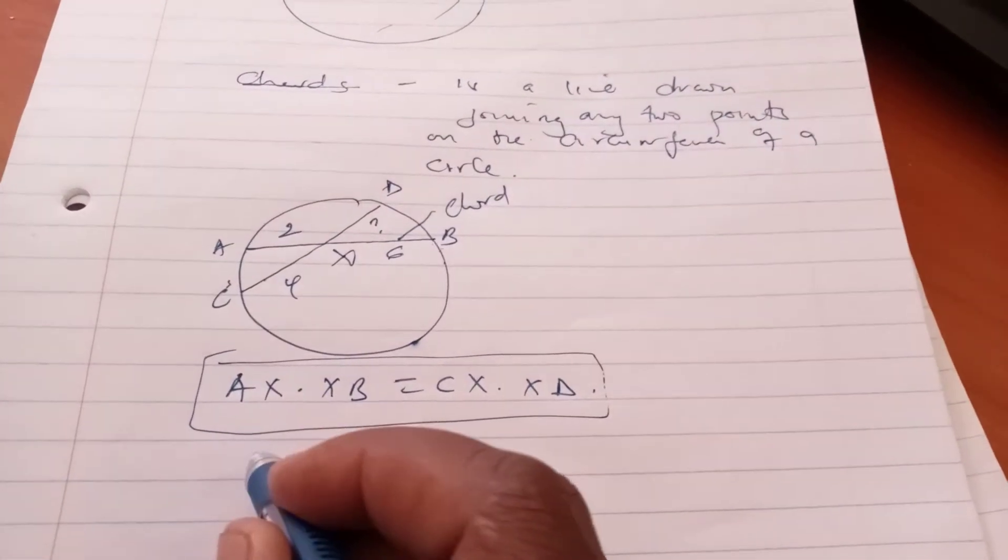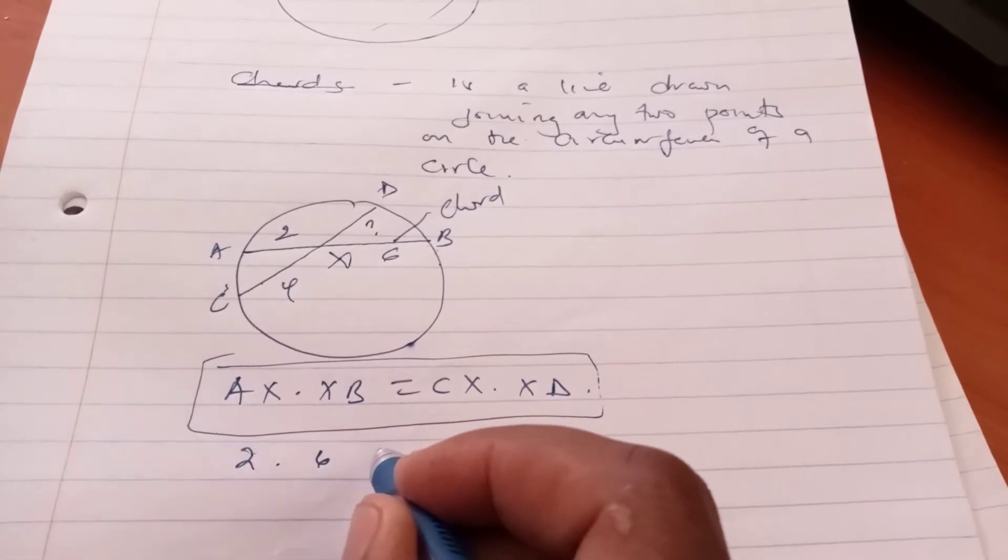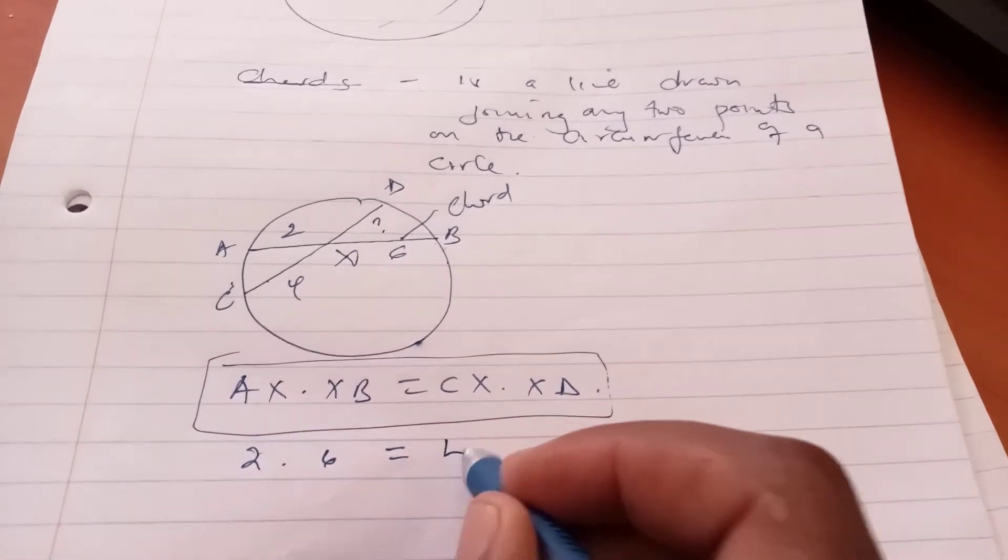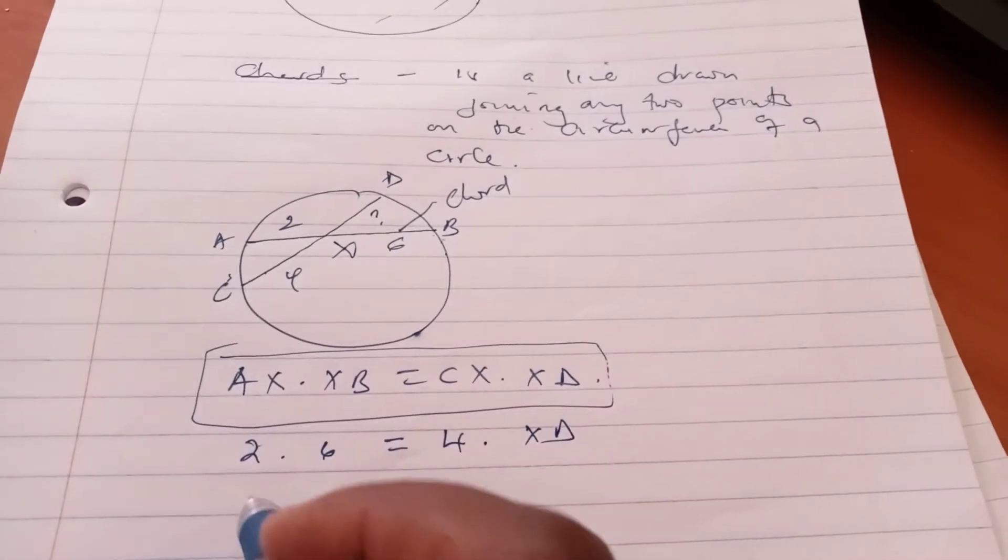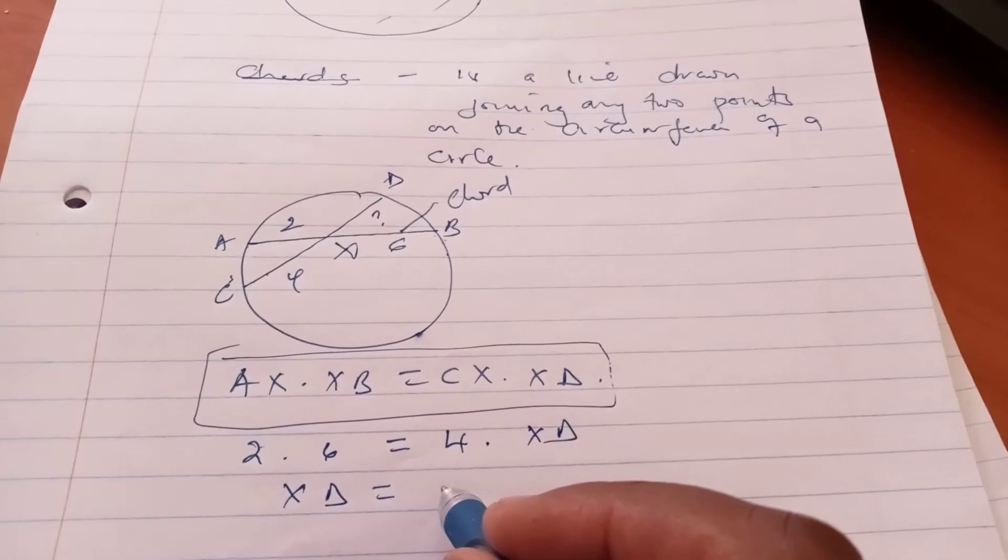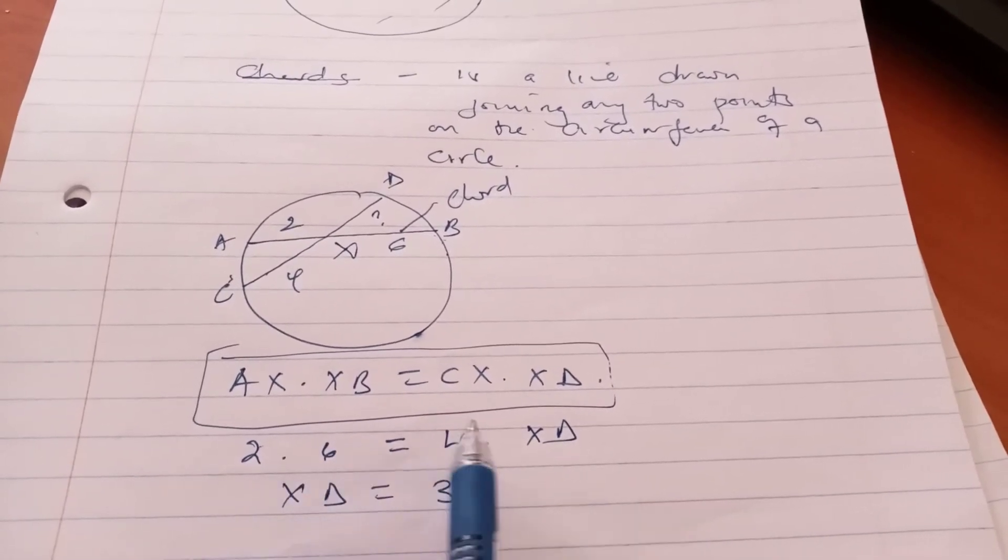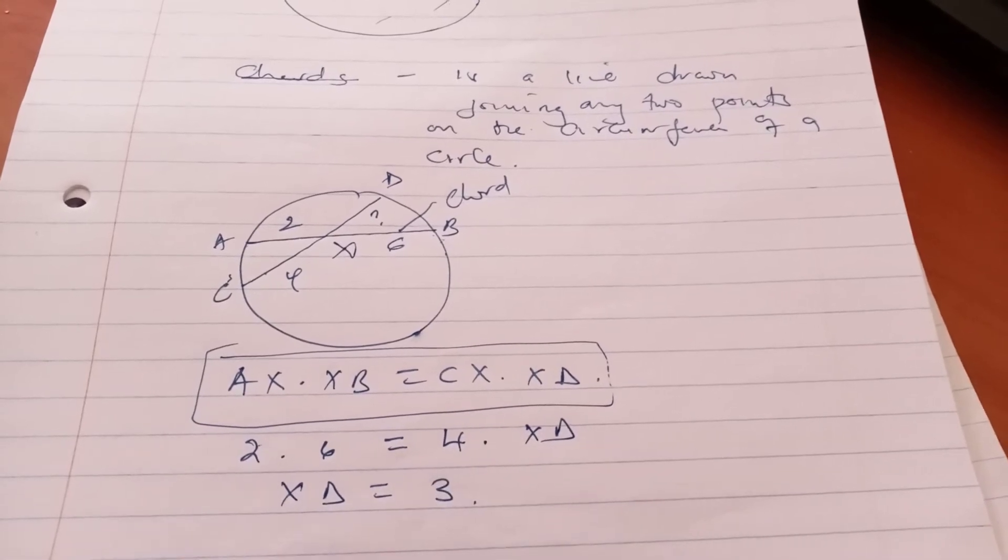So we have AX equal to 2 and XB equals 6. Then CX equals 4. But we don't know XD. So XD, it goes without saying that it's 3. Because this is 12 equals 4XD, divide by 4 both sides, you have 3.